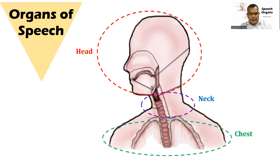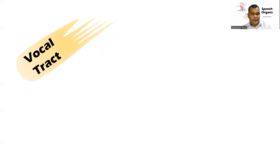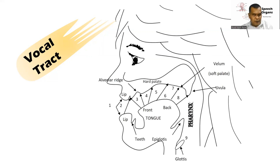Now let's look at the first part of our body in which our organs of speech are located — that is our head. Our head is also called the vocal tract. The vocal tract is known as the area from the larynx to our lips. This is the picture of our vocal tract, the area from our larynx to our lips.